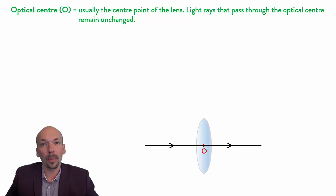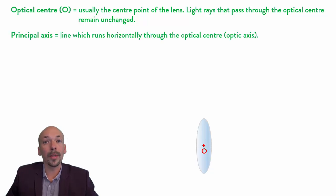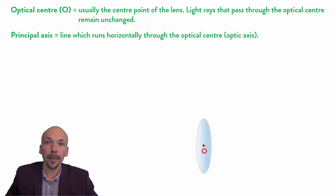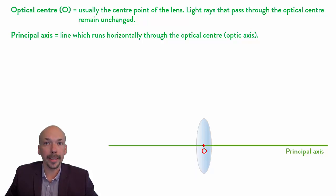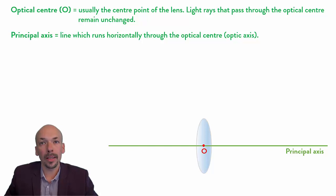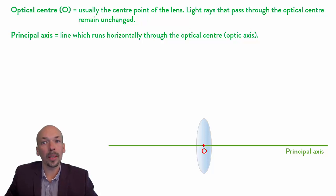If you have the optical center, you can also draw the principal axis. This is a line which runs horizontally through the optical center, and it's sometimes also called the optic axis. This is not a line that really exists, but it helps us when we are dealing with lenses.